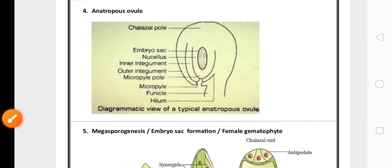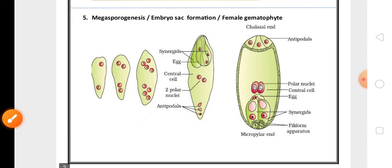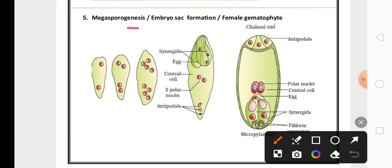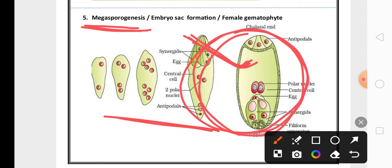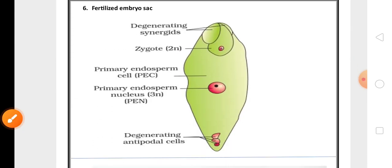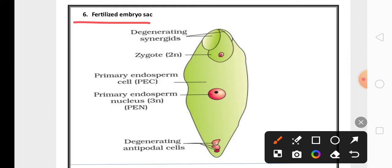Then the diagrammatic view of anatropous ovule is also very important for the exam. Then another five marks very important question is megasporogenesis or the formation of embryo sac. Embryo sac also called as female gametophyte. If they are asking embryo sac or female gametophyte, this one diagram is enough. Sometimes in the exam they may ask you to write the diagram of fertilized embryo sac and to represent the ploidy of zygote and primary endosperm nucleus.